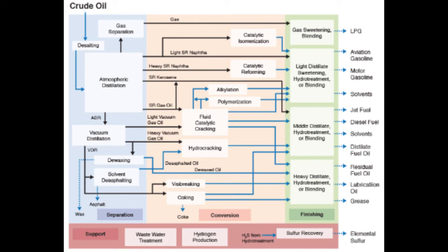Straight-run gas oil and straight-run kerosene are fed to middle distillate hydrotreatment or blending, along with an intermediate product from fluid catalytic cracking and the product from hydrocracking, to produce jet fuel, diesel fuel, solvents like kerosene, and distillate fuel oil. The heavy product from fluid catalytic cracking, along with the product from visbreaking, could be sent to heavy distillate hydrotreatment or blending to make residual fuel oil. The heavy product from coking could also contribute to the residual fuel oil pool.